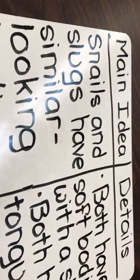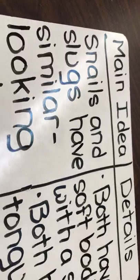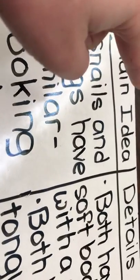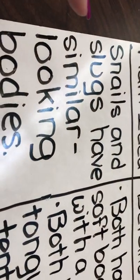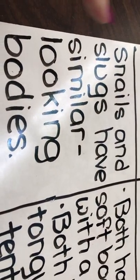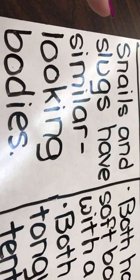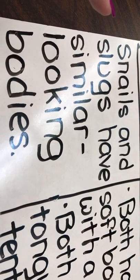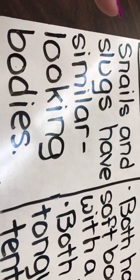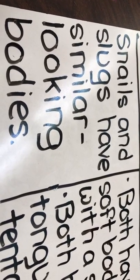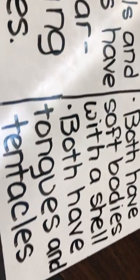So on this chart I have listed the main idea and the details. I decided that the main idea of this section is that snails and slugs have similar looking bodies. Now, what details from this section support that main idea?